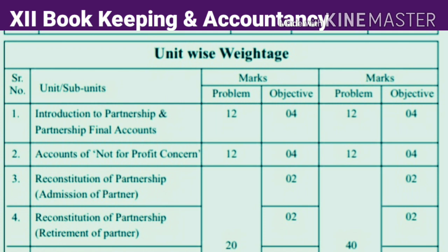Our second chapter's name is Account of Not-for-Profit Concern. This chapter is also for 16 marks. On this topic also, one problem will be asked for 12 marks and objective for 4 marks. Total 16 marks.